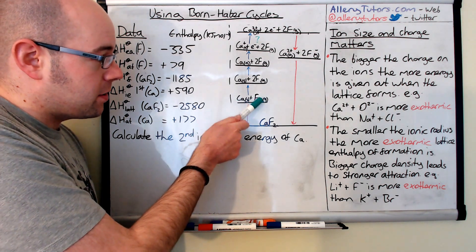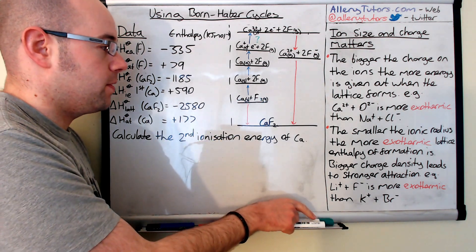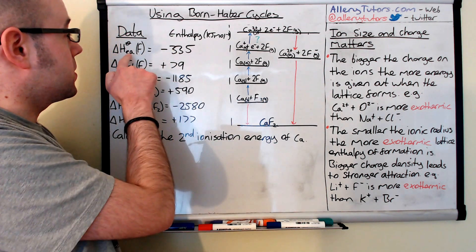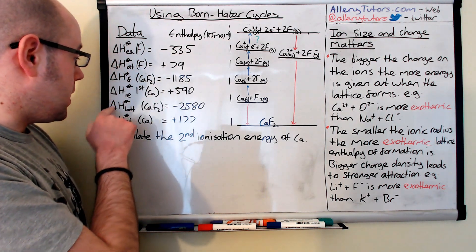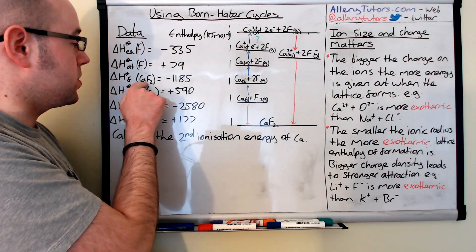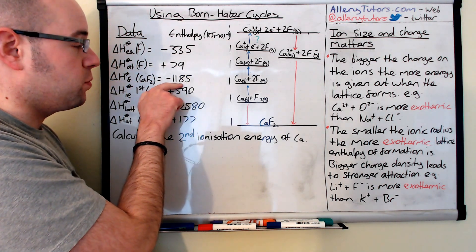So this is the enthalpy of formation of calcium dichloride. So we look in our data and we've got enthalpy of formation which is here of calcium dichloride is minus 1185.